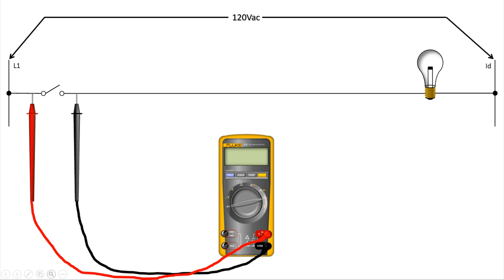The first thing we're going to look at is our meter connected across an open switch, with a light bulb in series with that switch. We're going to turn our meter on and think about what voltage we expect to see. I'm going to talk about something called the voltage divider concept. In a series circuit, the ohmic value of a component is directly proportional to the amount of voltage dropped across that component. High ohmic value means high voltage drop; low ohmic value means low voltage drop.